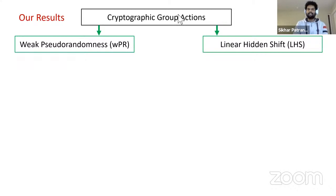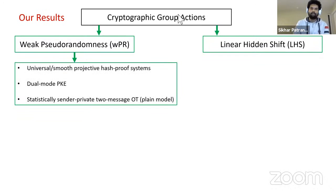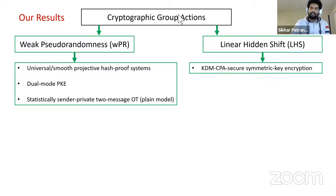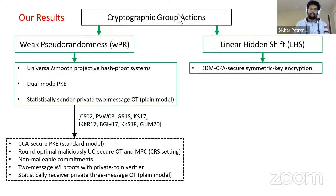Here is a quick summary of our main results. We consider cryptographic group actions with two main assumptions: the weak pseudorandomness assumption and the linear hidden shift (LHS) assumption. Group actions with weak pseudorandomness can be used to build universal and smooth projective hash-proof systems, dual-mode public key encryption, and statistically sender-private two-message oblivious transfer protocols in the plain model. Group actions with the LHS assumption can be used to build key-dependent message CPA-secure symmetric key encryption. These can further yield CCA-secure public key encryption in the standard model, round-optimal maliciously universally-composable secure OT and multi-party computation protocols, and non-malleable commitments.